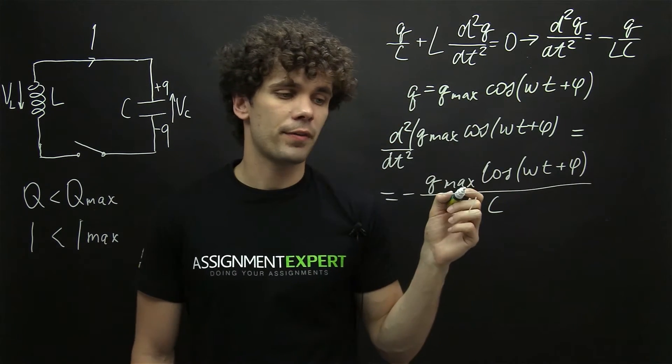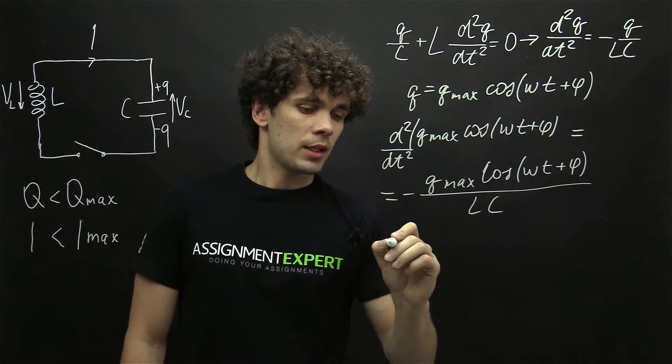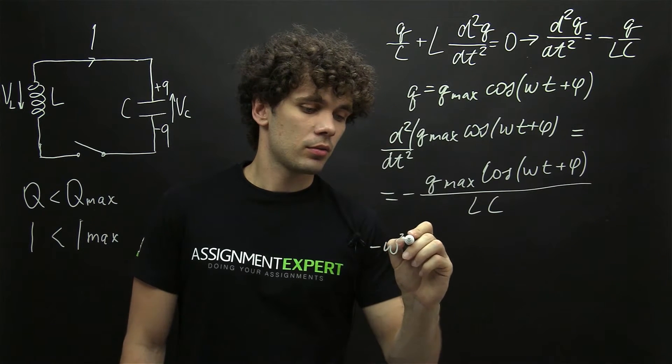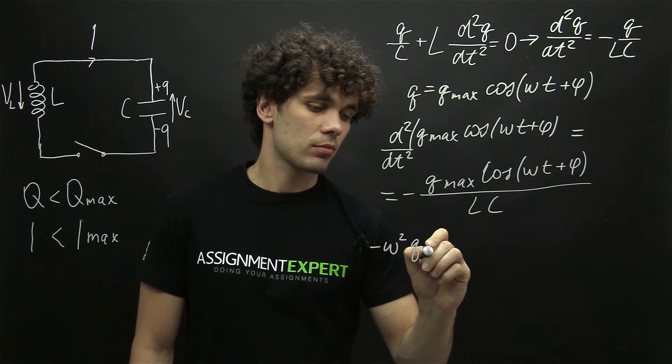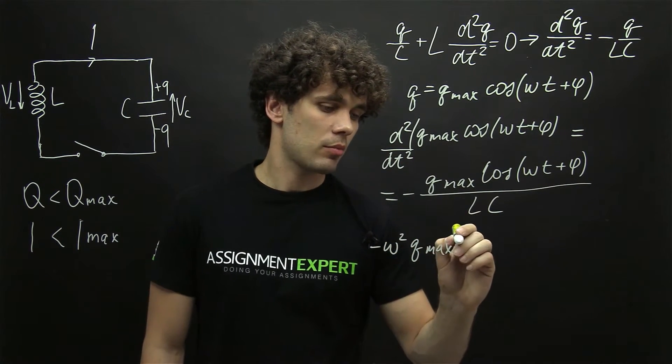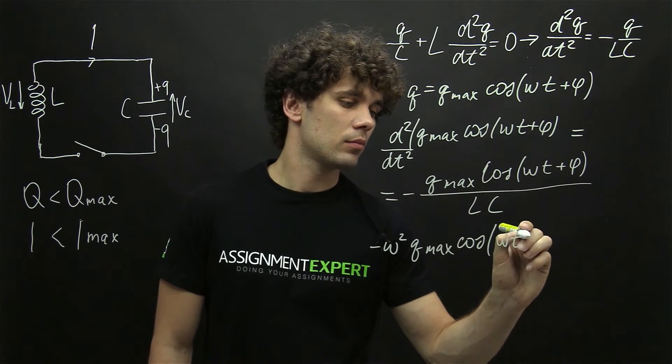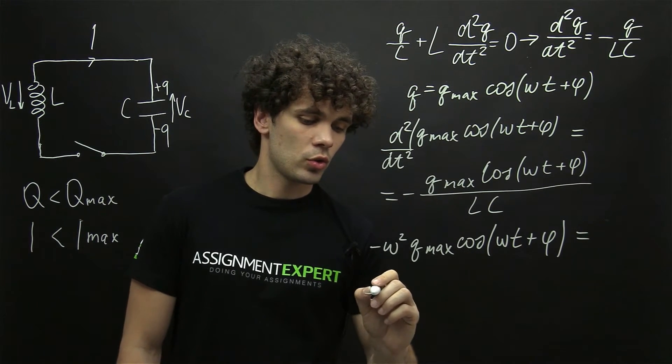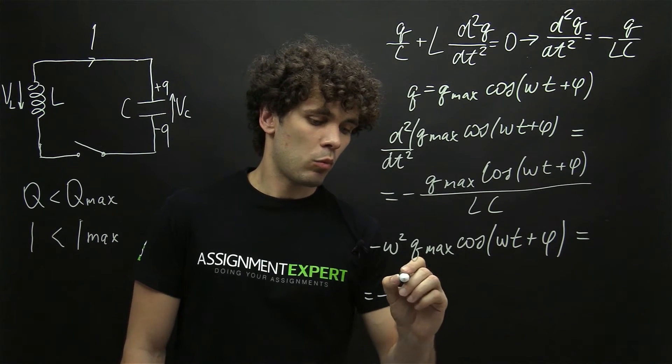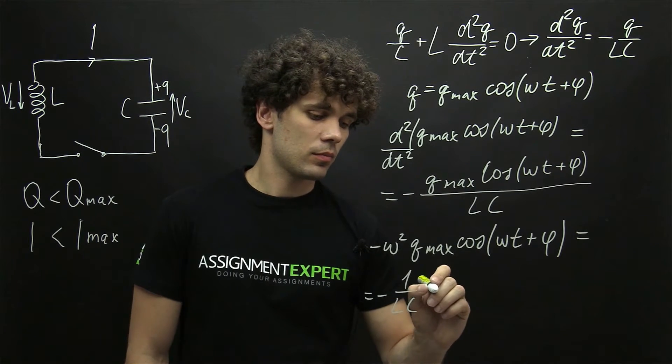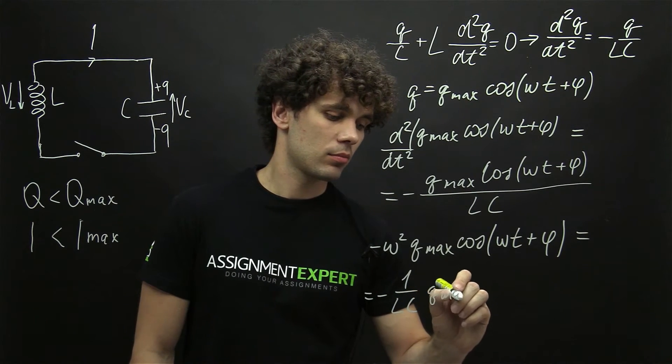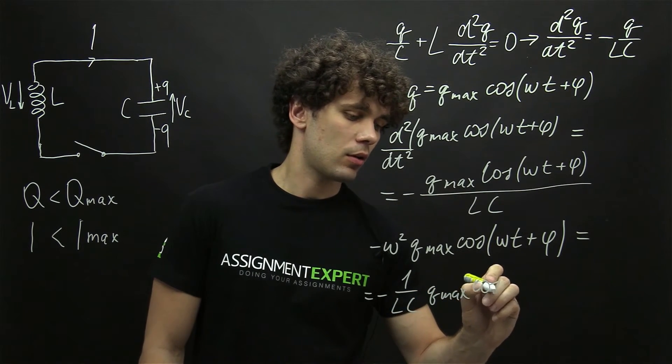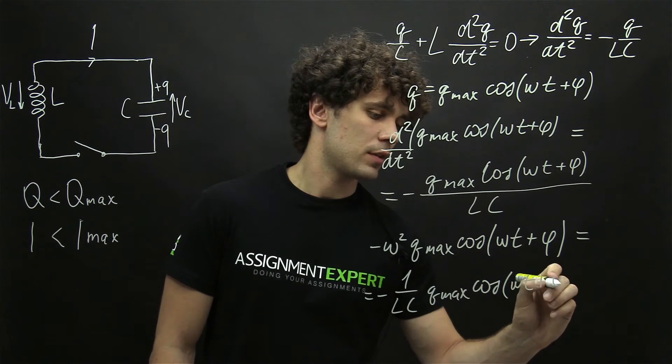Now let's find the derivative. We will get negative omega squared times Q max times cosine of omega t plus phi, equal to negative one over LC times Q max times cosine of omega t plus phi.